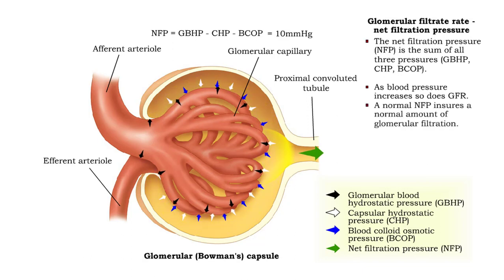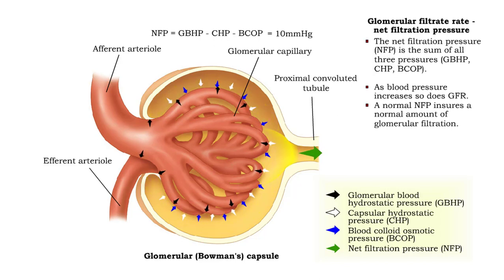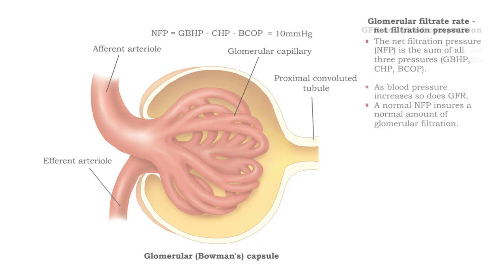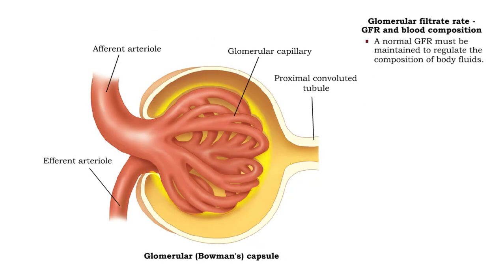A normal net filtration pressure ensures a normal amount of glomerular filtration. When net filtration pressure is normal, the amount of glomerular filtration will be normal as well. A normal glomerular filtration rate must be maintained to regulate the composition of body fluids.